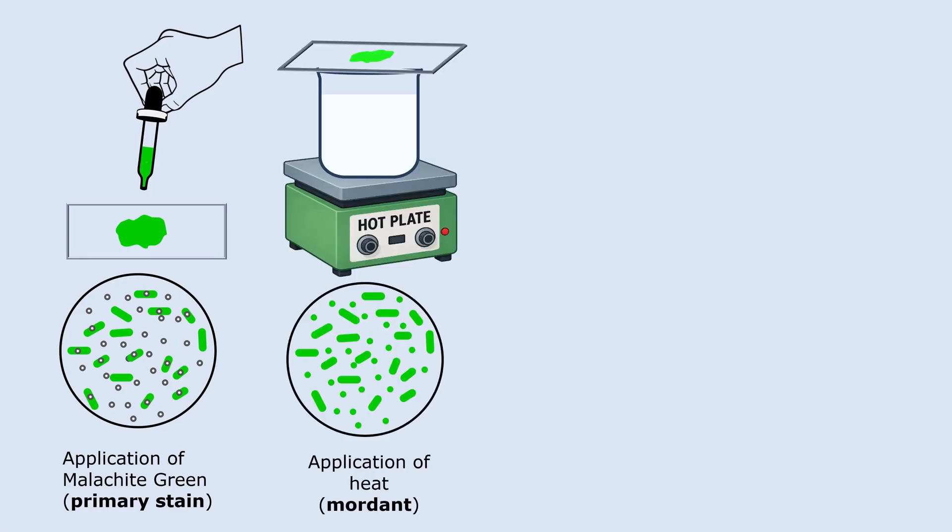Now what changes after steaming? Heat in the form of steam acts as a mordant. When heat is applied, the thick multi-layered protective coat temporarily becomes soft, which allows malachite green to penetrate the spore. Once the slide cools, the spore coat hardens again, trapping the dye inside. Since malachite green has penetrated the spore, it stays locked in.